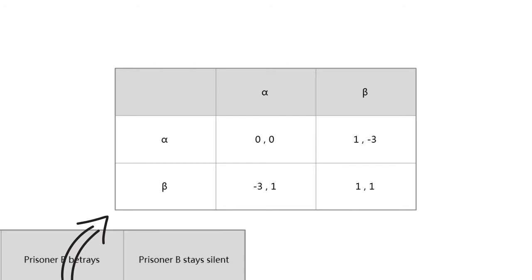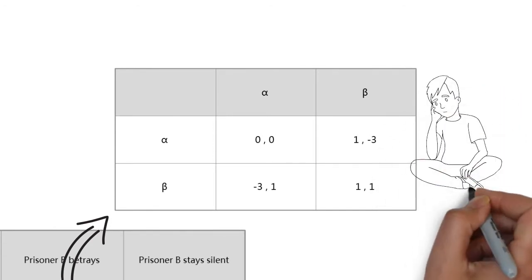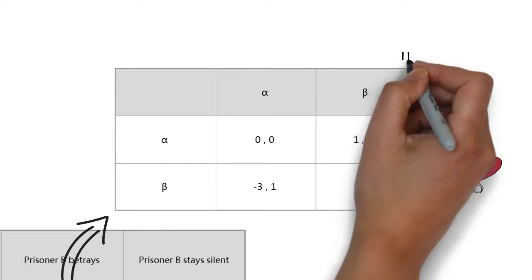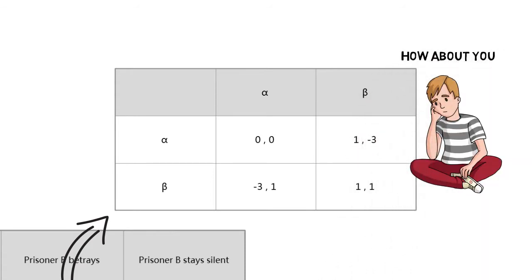If A chooses alpha and B chooses beta, A gets one and B gets minus three. If A chooses beta and B chooses alpha, A gets minus three and B gets one. If they both choose beta, they both get one. Of course they can't communicate. If you are A, what will you choose? You can pause the video and think about it, and the answer is right after.